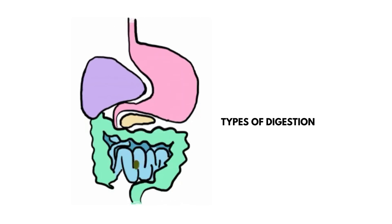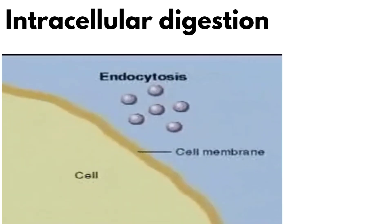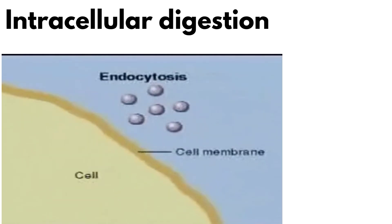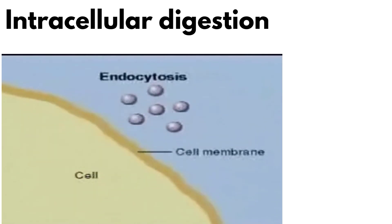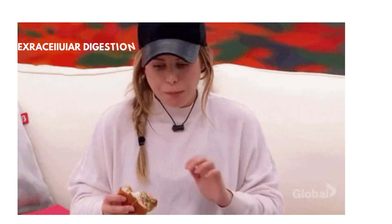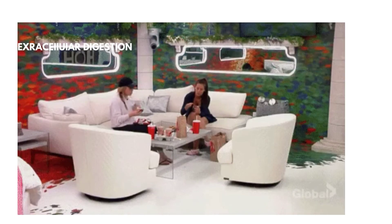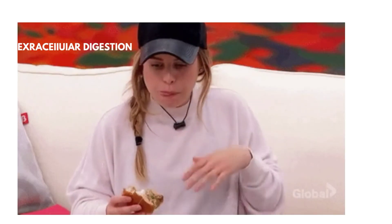Digestion has different types, varying from organism to organism. The first type is intracellular digestion, which occurs by endocytosis — as we can see in this video. A cell engulfs food into the cell membrane, and the cell secretes enzymes to digest that food. This is called intracellular digestion and is found mainly in unicellular organisms such as protozoans.